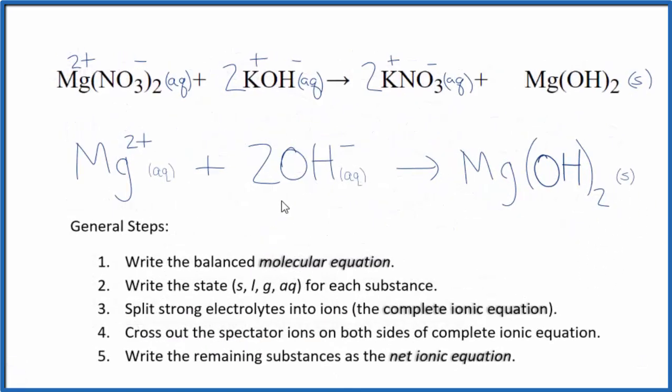This is the balanced net ionic equation for magnesium nitrate plus potassium hydroxide. Note that the charge is balanced. We have 2+ here and two times 1-, so 2+ and 2-, giving us a net charge of zero. Over here, this is neutral, net charge of zero. And if you count the atoms up, they'll be the same as well.